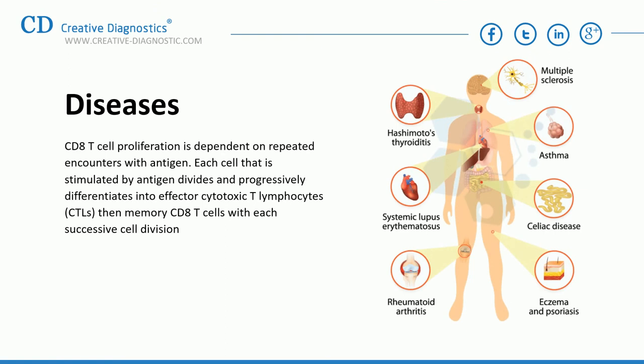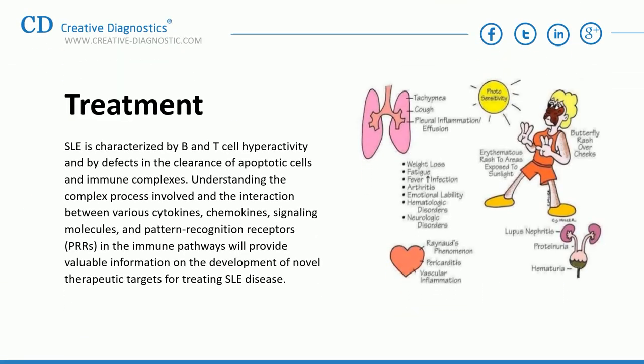TH1 patterns of cytokine production are associated with inflammation and autoimmune disease, while TH2 patterns are characteristic of allergic responses and asthma. One example is systemic lupus erythematosus (SLE), an autoimmune disease of unknown etiology affecting more than one million individuals each year. SLE is characterized by B and T cell hyperactivity and defects in the clearance of apoptotic cells and immune complexes. Understanding the complex interactions between cytokines, chemokines, signaling molecules, and pattern recognition receptors in immune pathways will provide valuable information for developing novel therapeutic targets for treating SLE.